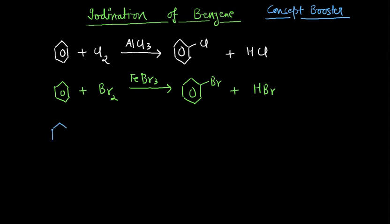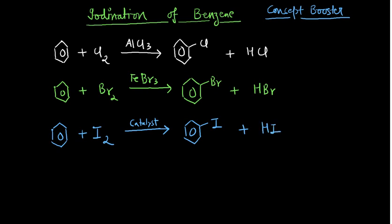Now if you do the same reaction with benzene and want to do iodination — that means adding iodine in a substitution reaction with some catalyst — your expectation would be a very good yield of iodobenzene with HI as the byproduct. But in that case the yield is very poor, which means iodination of benzene under normal conditions is very, very difficult.